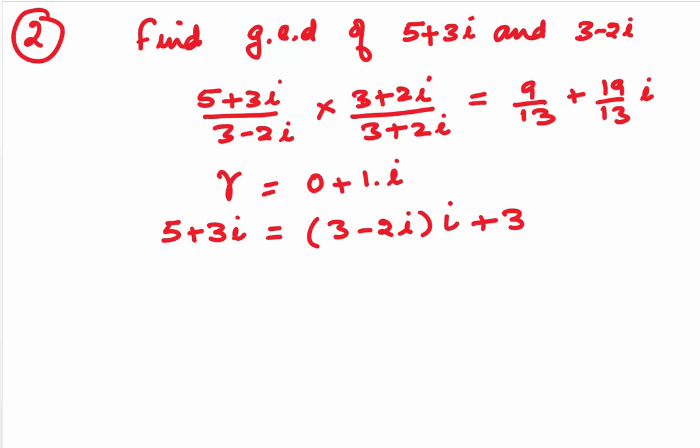At this stage, if you check, you will see that the condition 0 is less than norm of your delta is less than norm of beta would be satisfied. Now, you would be dividing 3 minus 2i by 3. So, our next step would be 3 minus 2i is equal to 3 into, we would be getting our gamma as 1 minus i. Your delta would be i. Again, if you check, your condition of norm would be satisfied.